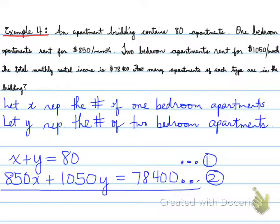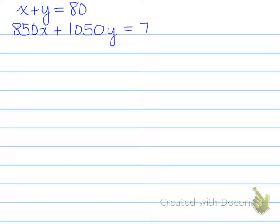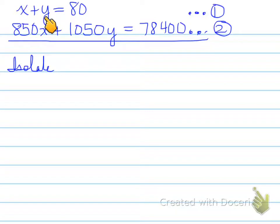Now that we have our two equations — call them equation 1 and equation 2 — let's move on. First step: isolate. We can isolate for X or for Y; it doesn't matter which one. I recommend you stop the video now and try to solve this problem yourself. Don't forget: isolate, sub, sub, check.